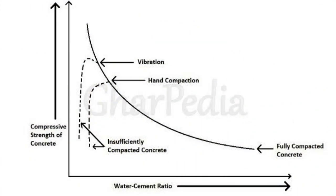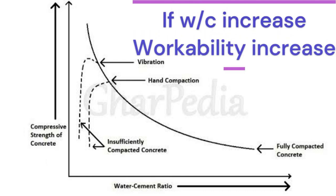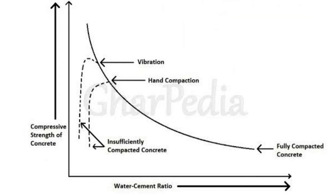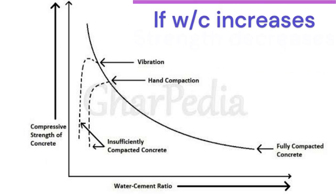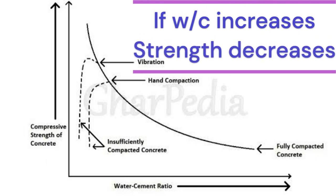Water-cement ratio affects the workability of concrete and thus should be taken into careful consideration. Also, if the ratio exceeds the normal value, segregation of concrete occurs and the coarse aggregate settles at the bottom, thus affecting the strength of concrete greatly.